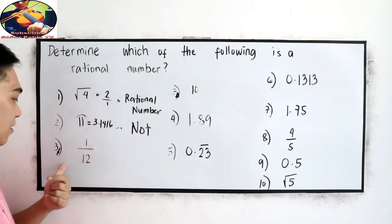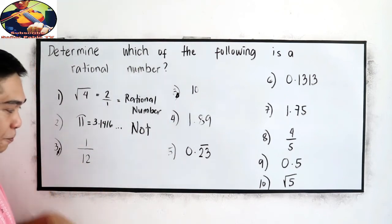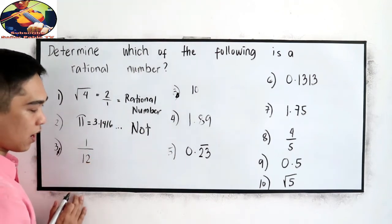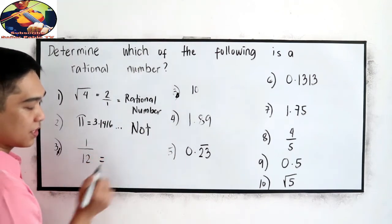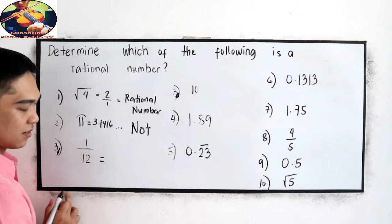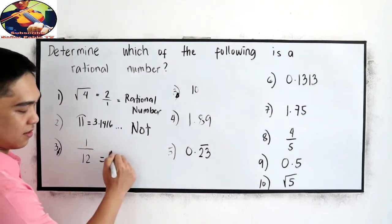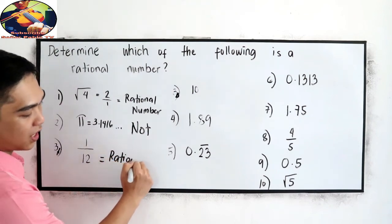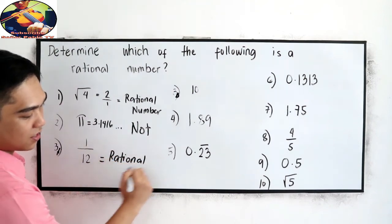Number 3a: 1 over 12. This is a rational number.